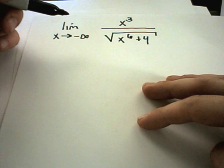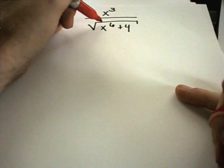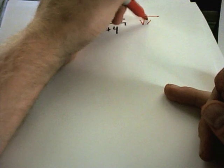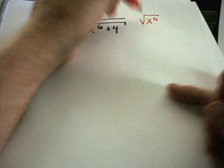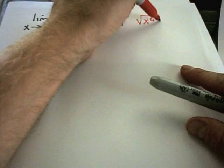Okay. In this example, same thing, I'm going to pick the highest power of x in the denominator. Well, I see a square root of, excuse me, I see an x to the sixth under the square root.